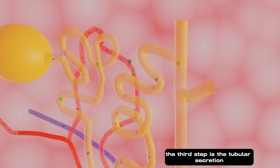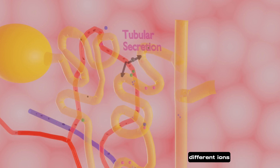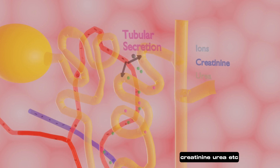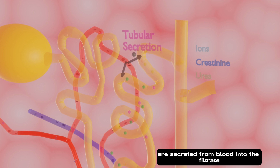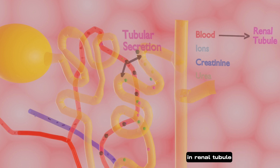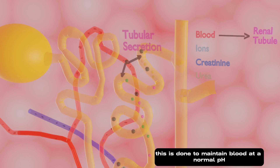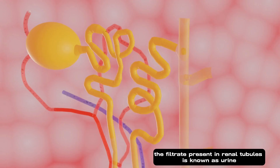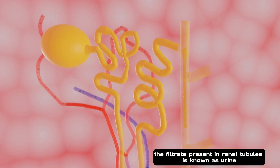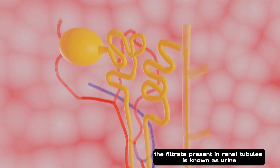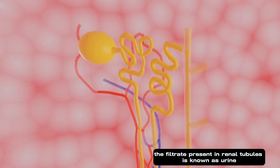The third step is tubular secretion. Different ions, creatinine, urea, etc. are secreted from the blood into the filtrate in the renal tubule. This is done to maintain blood at a normal pH. The filtrate present in the renal tubules is known as urine.